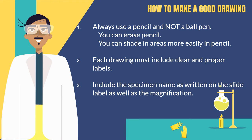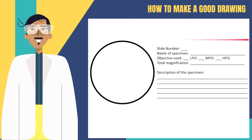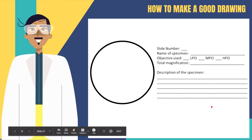These are some tips on how to make a good drawing. Always use a pencil, not a ball pen — you can erase pencil marks if you make a mistake, and shading is easier. Each drawing must include clear and proper labels of the parts as you research the specimen. Include the specimen name as written on the slide, a slide label, the magnification used, the objective used, the total magnification computation, and a brief description of what you saw.